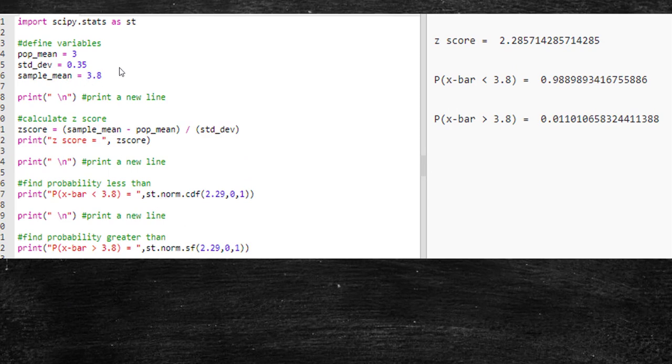All I did was define my variables: population mean, population standard deviation, and sample mean. I printed a new line for spacing. I got my z-score by x-bar minus mu over sigma, and printed out the z-score.